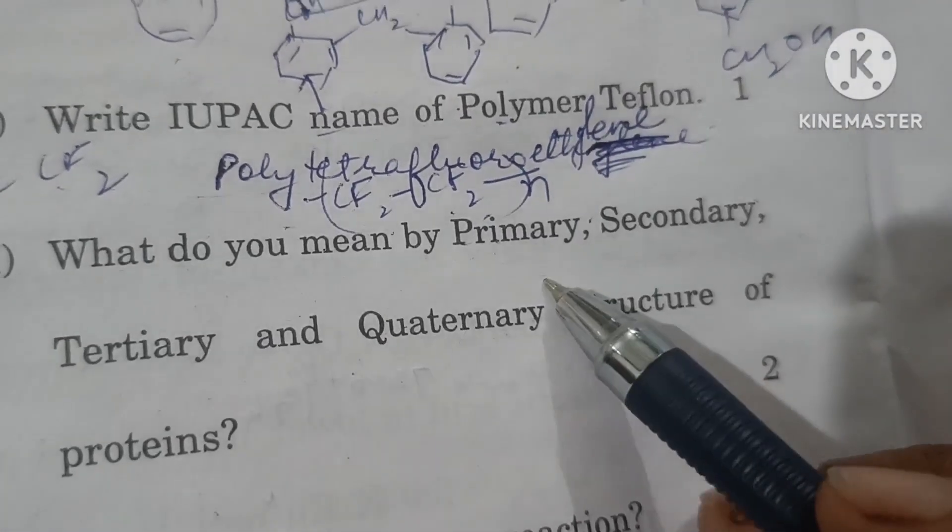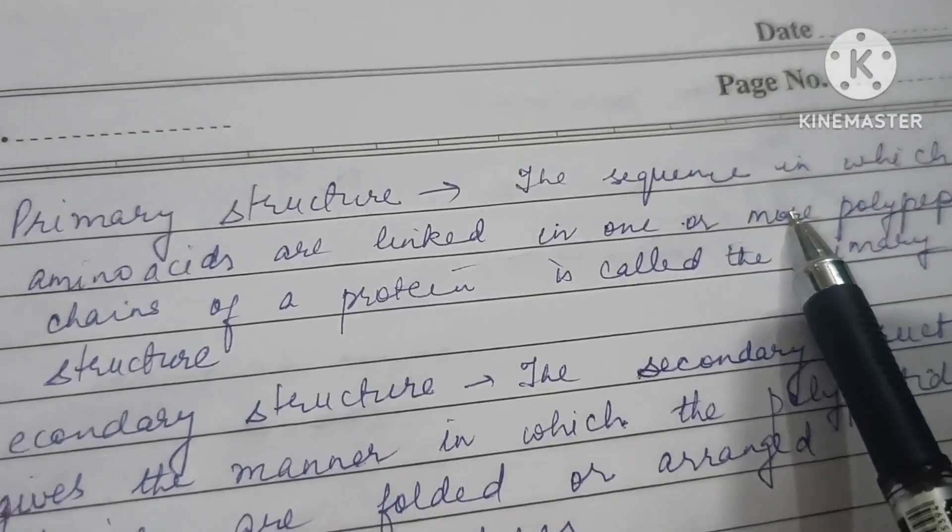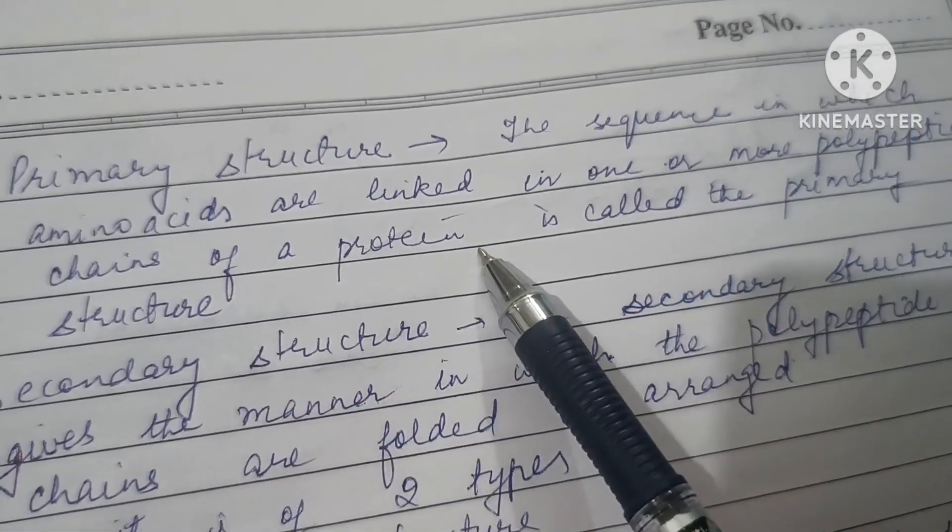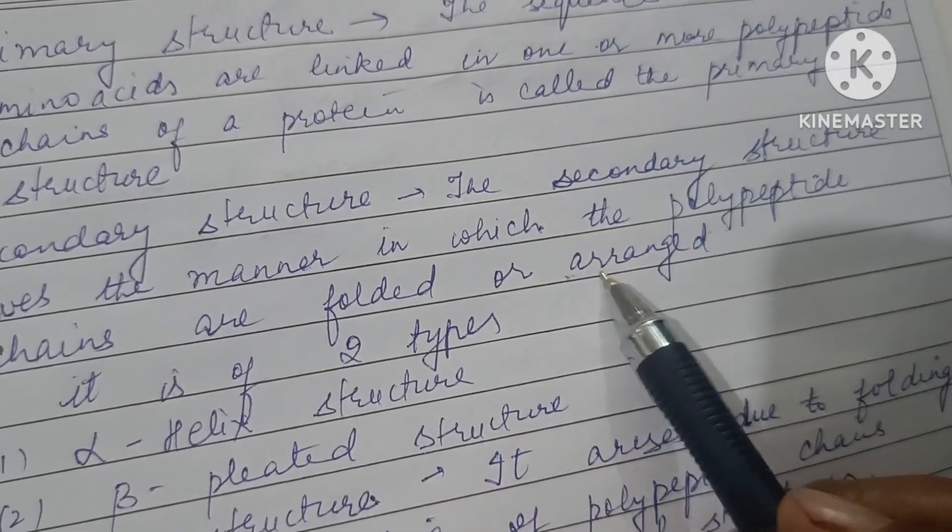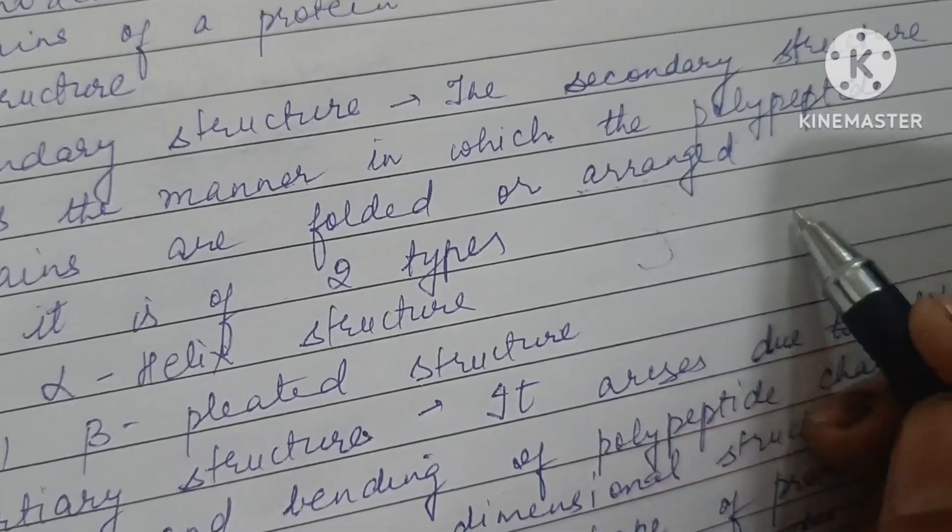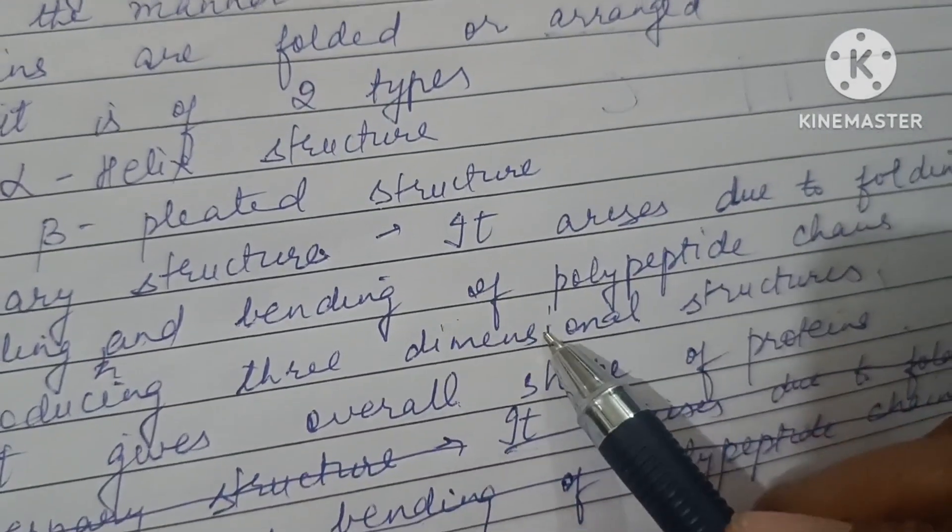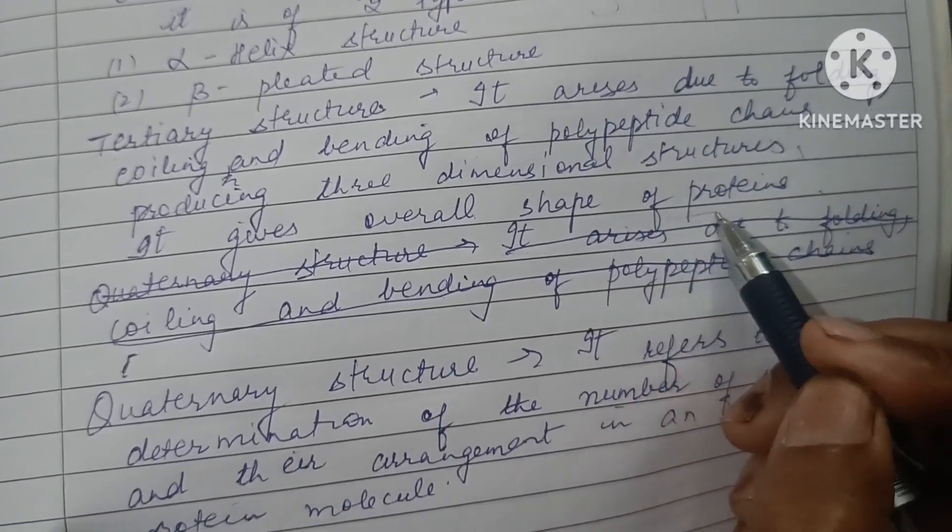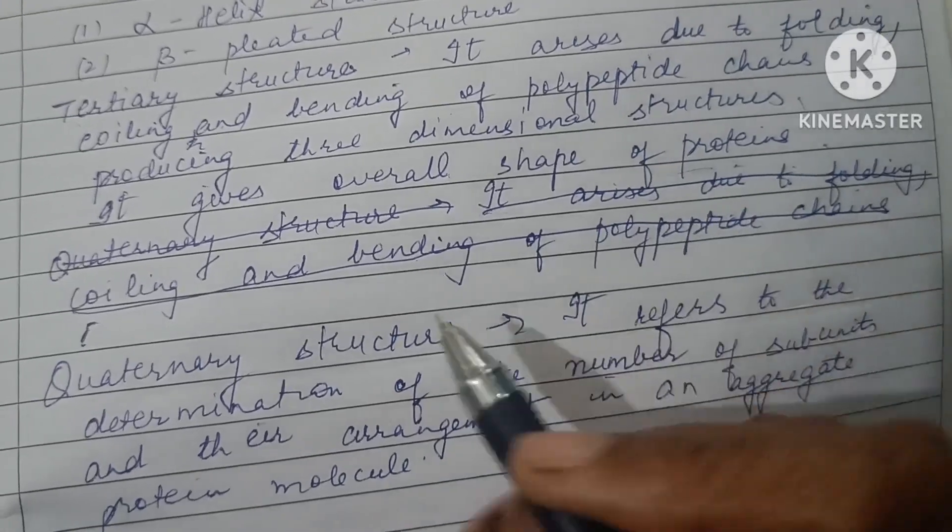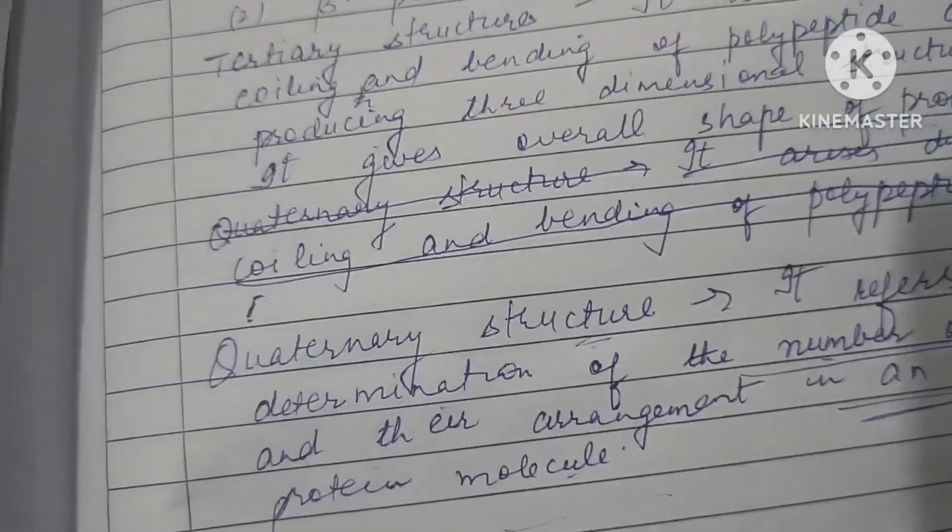What do you mean by primary, secondary, tertiary, and quaternary structures of protein? Primary structure is just the sequence of amino acids. It's the sequence in which amino acids are linked in one or more polypeptide chains in a protein. Secondary structure gives the manner in which polypeptide chains are folded or arranged. It can be alpha helix type or beta pleated structure. In tertiary structure, molecules further fold. It arises due to folding, coiling, and bending of polypeptide chains to produce three-dimensional structure. It gives the overall shape of protein; it may be globular or fibrous. Quaternary structure refers to the determination of number of subunits and their arrangements in an aggregate protein molecule.